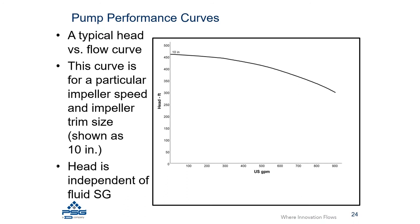The first part of a performance curve is the head versus flow line, or H-Q curve, for a centrifugal pump. The vertical axis is typically head in feet or meters, and the horizontal axis is typically flow in gallons per minute or another flow measurement. There is a line defining how much head the pump generates at a particular flow rate, and that line represents a specific impeller trim.